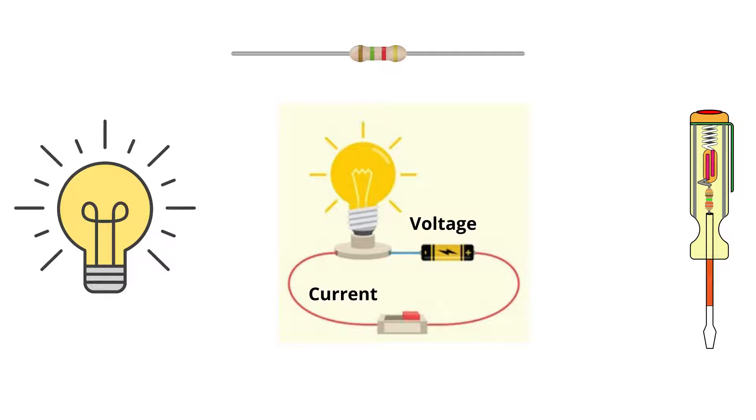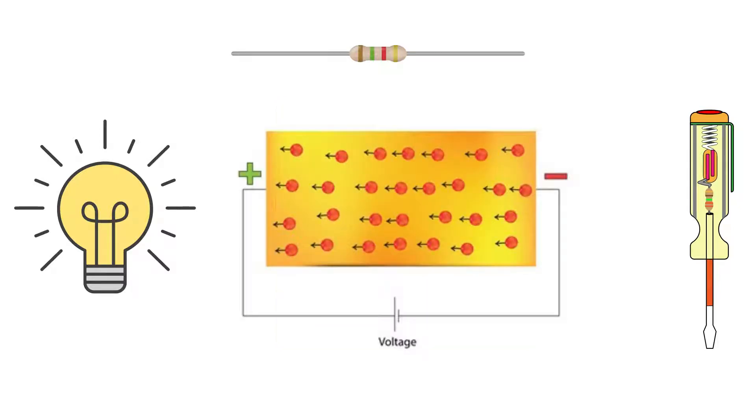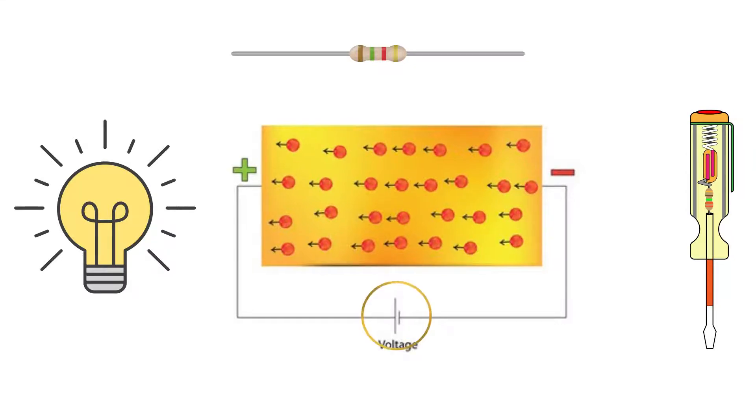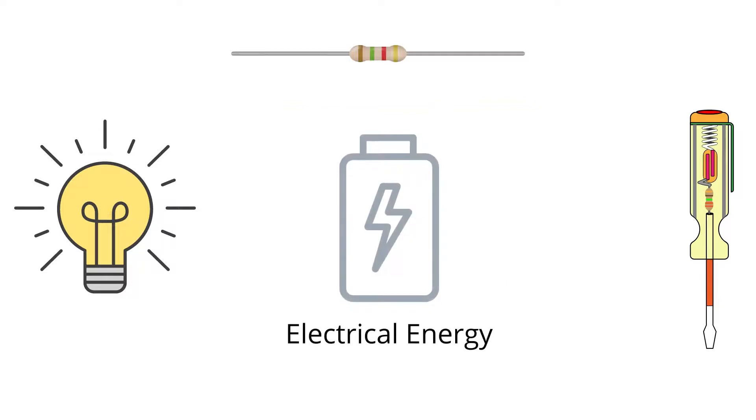We have learned from previous topics about electricity that work is done to move the electrons continuously in the circuit, and this work is done by the voltage supply or the potential difference. So the voltage supply does electrical work in moving the electrons in the circuit, and hence the form of energy used up is electrical energy.